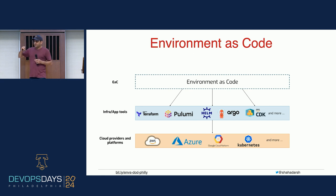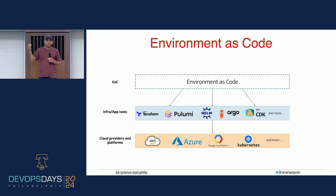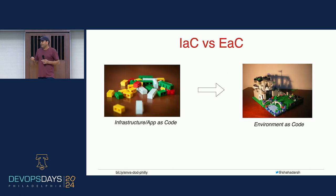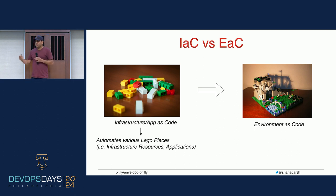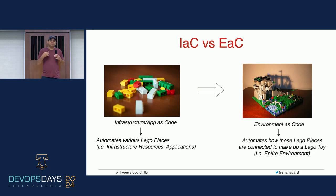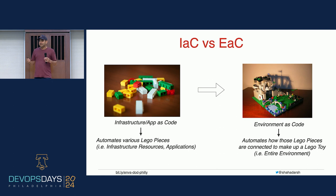Here's another view of this — is there a way to extract that out and make it simple so that as a dev you don't have to deal with all these automation tools? Using the Lego analogy: the difference between infrastructure or app as code versus environment as code is that infrastructure or app as code is like building your individual Lego pieces — you build your various infrastructure resources or deploy your apps, but you still need to glue them together to get something meaningful. To me, a production environment means everything: my networking, my database, my apps, my third-party services. So environment as code is something that automates connecting those Lego pieces and gives you a complete Lego toy, which is what is more meaningful.